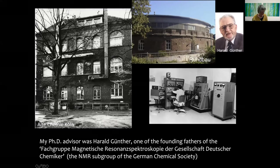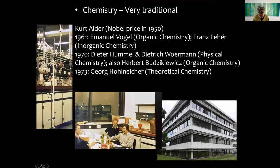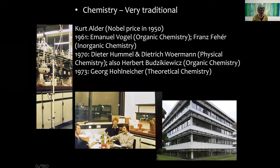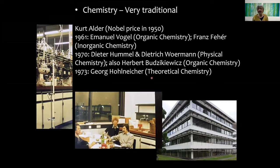Chemistry was a very traditional discipline in Germany. Kurt Alder, who got the Nobel Prize in 1950, died fairly young. They decided no single person could replace him, so the institute was divided into two — organic and inorganic chemistry — and later extended with two physical chemists, an organic chemist, and a theoretical chemist. In 1978, we moved into a very modern new building.